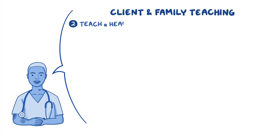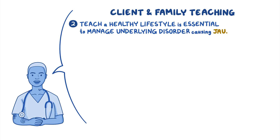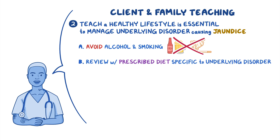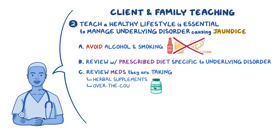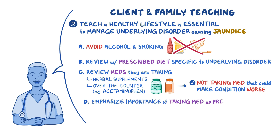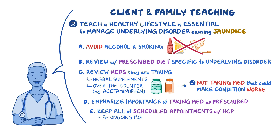Teach your client that a healthy lifestyle is essential to manage the underlying disorder causing their jaundice. Advise them to avoid alcohol and smoking, and review with them the prescribed diet specific to their underlying disorder. Review each of the medications they are taking, including herbal supplements and over-the-counter medications like acetaminophen, to ensure that they are not taking medications that could make their condition worse. Lastly, emphasize the importance of taking medications as prescribed for their underlying condition, and to keep all of their scheduled appointments with their healthcare provider for ongoing monitoring and treatment.